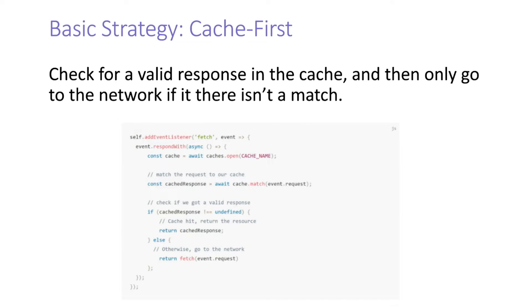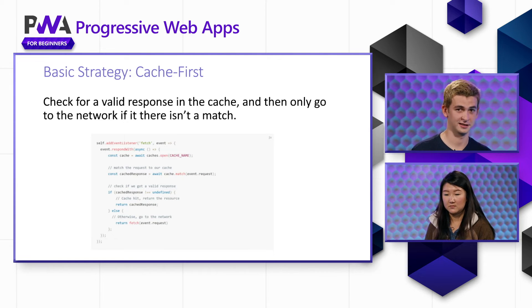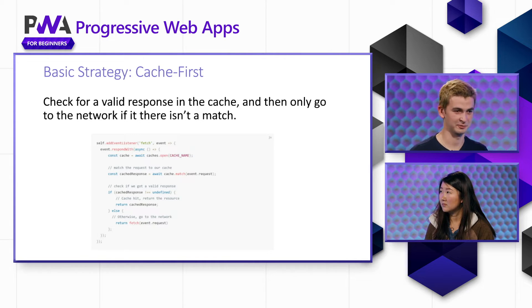In the cache first strategy, we check for a valid response in the cache first. When we receive the fetch event, we go check the cache to see if the response we're looking for is in there. If it's not, we go to the network to try to find the match. So basically, we always go to the cache unless it doesn't work out, then we make a request to the network. This one almost always uses the cache if it has the asset and doesn't necessarily check the network. As you can probably guess, this may lead to stale content — you might just be grabbing the same old content over and over again. But it's pretty easy to implement and understand, so it's a good place to start.